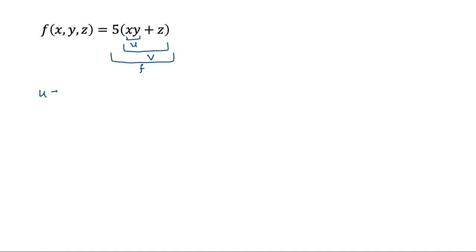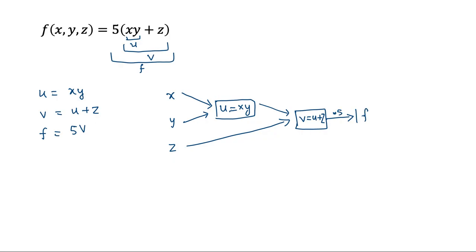Let me write: u equals xy, v equals u plus z, and f equals 5 times v. These are the inputs x, y, z. First you multiply x and y. Once you have u, you add z to get v equals u plus z. Then you multiply v by 5 to get f. This is the output.